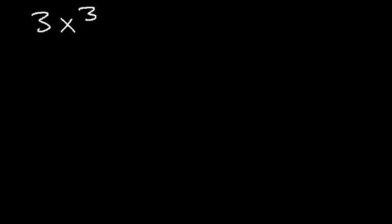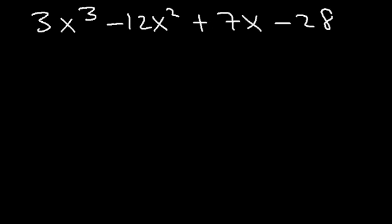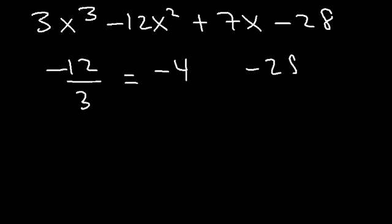Let's try another example with a cubic polynomial: 3x cubed minus 12x squared plus 7x minus 28. Let's verify we can factor by grouping: negative 12 divided by 3 equals negative 4, and negative 28 divided by 7 is also negative 4.